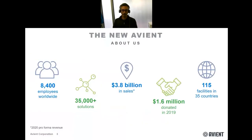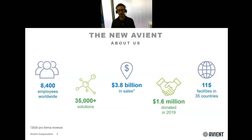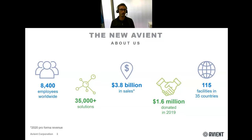Aviant is a multinational company with more than 8,000 employees worldwide and more than 35,000 material solutions. In 2020 we realized 3.8 billion dollars in sales across our 115 establishments located in more than 35 countries around the world. Some people may know us by one of our old names such as Polyone or Clariant Masterbatches. In short, we are compounders — the vocation of the company is to make unfilled plastics functionalized with different types of additives and reinforcements to meet the requirements of our customers.